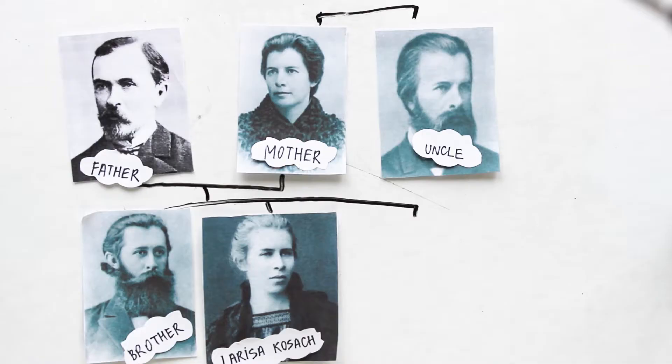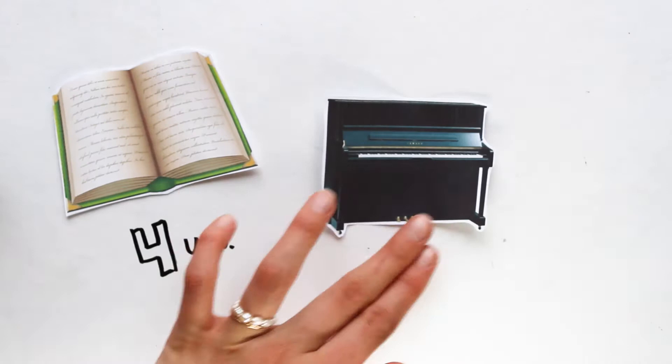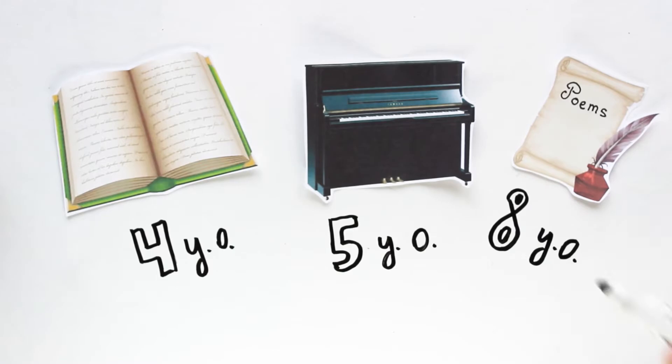The family had three sisters and one more brother. If Lesya lived now, she would definitely be called an indigo child. Being four years old, the girl learned to read. At five, to play the piano. At the age of eight, she began to write poems.